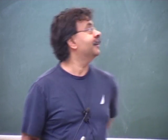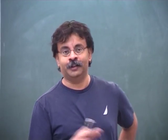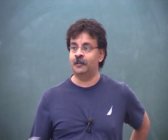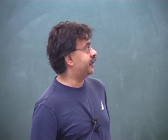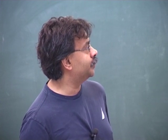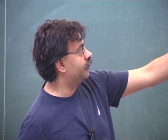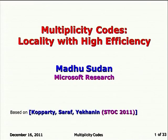I will tell you about something that I consider very interesting in the arena of algorithmic results in coding theory. This is based on some work of Swastik Kopparty, Shubhangi Saraf, and Sergei Yekhanin. Swastik and Shubhangi were students at MIT in those days, but all this work was done at Microsoft in Silicon Valley.